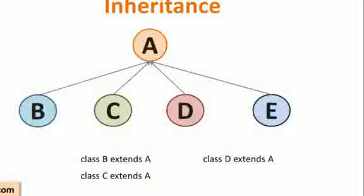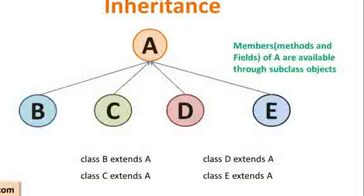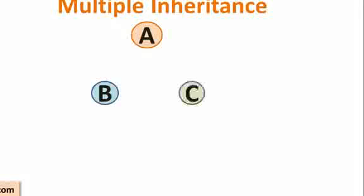...D extends A, and E extends A. This is fine. But what happens if multiple inheritance is part of it? A is a superclass, now B and C are the subclasses and they extend A.